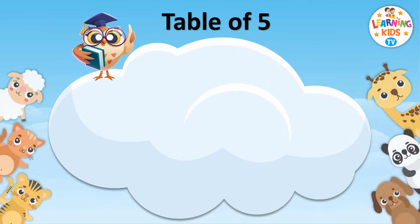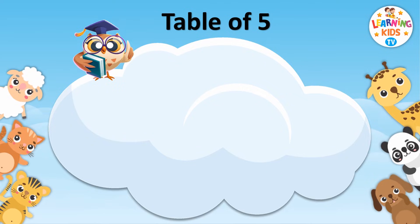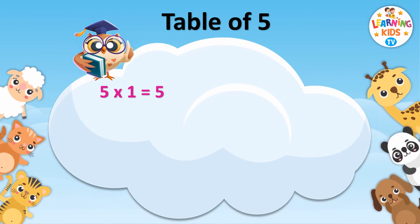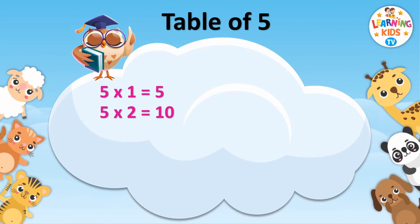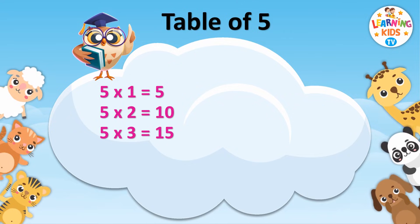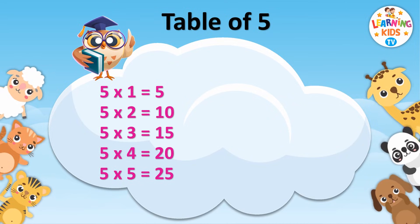Table of Five. 5 ones are 5. 5 twos are 10. 5 threes are 15. 5 fours are 20. Five fives are twenty-five.